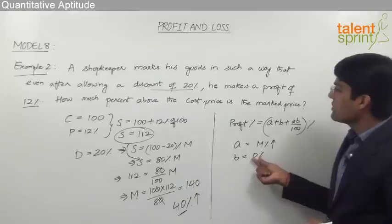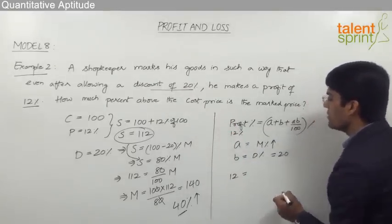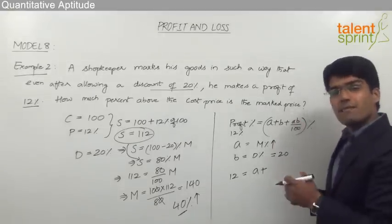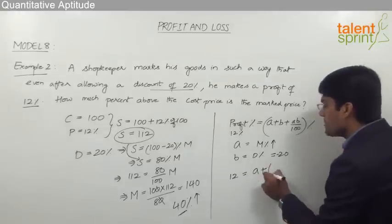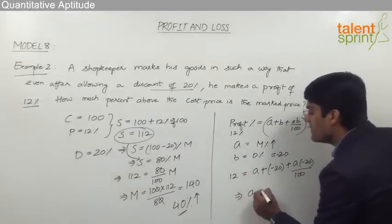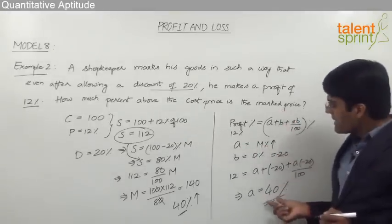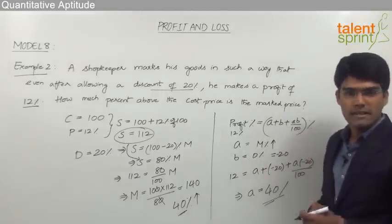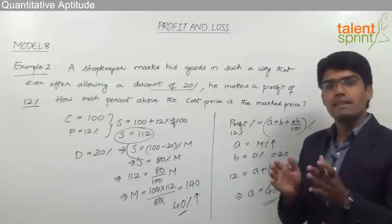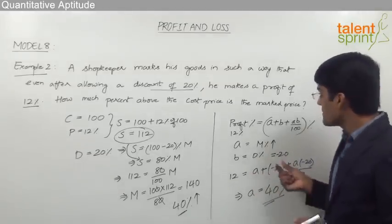From the given question, discount is 20% and profit is 12%. Since discount is a decrease, B is taken as −20. So: 12 = A + (−20) + A×(−20)/100. Solving this equation gives A = +40%. Therefore the percentage by which the marked price has been taken above the cost price is 40%. Whether you use the effective percentage method or assume cost price = 100, the answer is the same. Remember: the net percentage is the profit, A is the mark-up, and B is negative for discount.